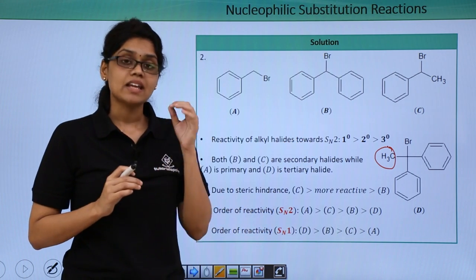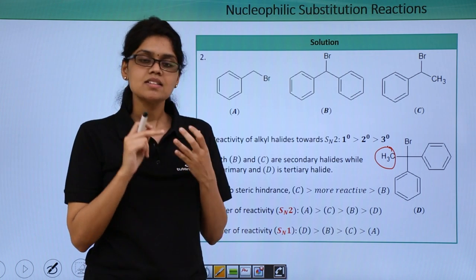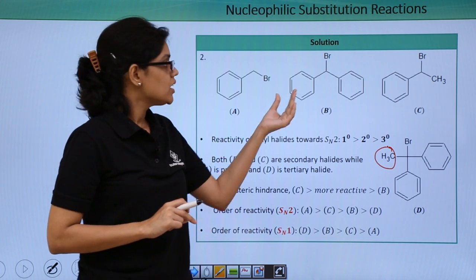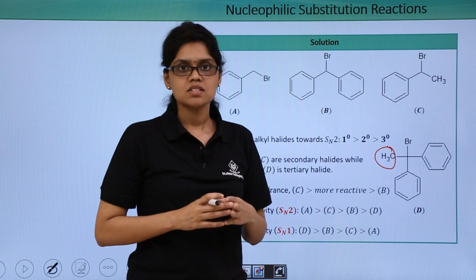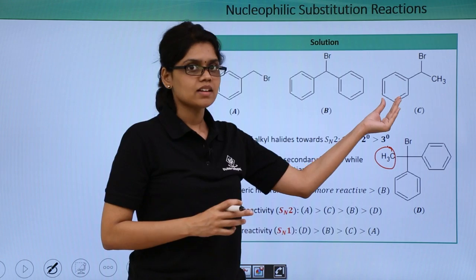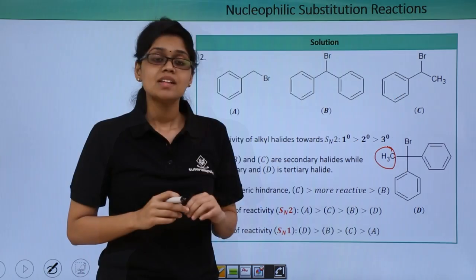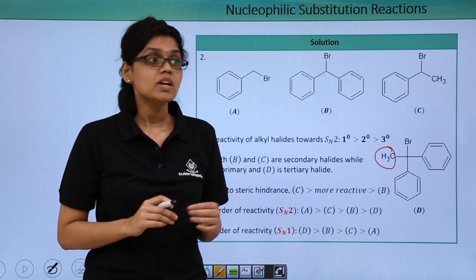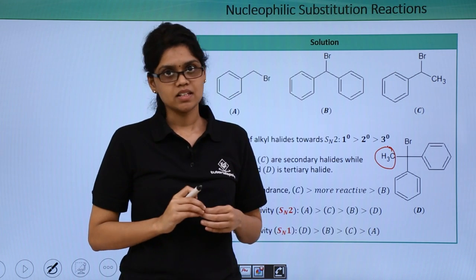We know that the reactivity of alkyl halides towards SN2 reaction follows the order: primary > secondary > tertiary. So here we have a primary alkyl halide (A), two secondary alkyl halides (B and C), and one tertiary alkyl halide (D). There could be confusion as to which of the two secondary alkyl halides will be more reactive towards SN2 reaction. Since SN2 reaction is highly susceptible to steric inhibition, the compound that is less sterically hindered will be more reactive.